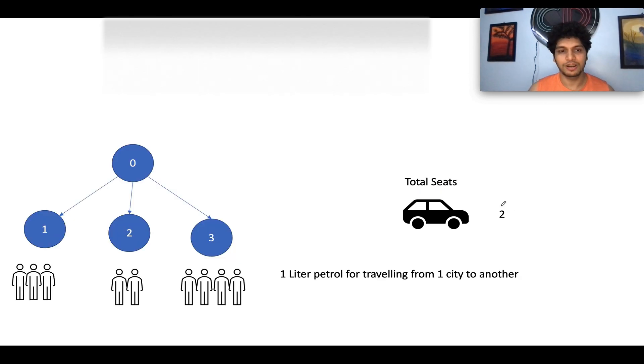But if I ask you guys, let's consider a hypothetical scenario wherein the 0th city has three children. That means it is connected with three children: one, two, and three. At the first city, you have three passengers. At the second city, you have two passengers. At the third city, you have four passengers. If I ask you, the total number of petrol needed to make sure that all these passengers finally travel to the 0th city, what would the answer be? So let's try and calculate it.